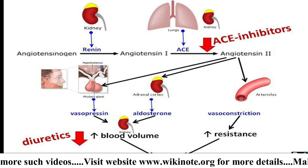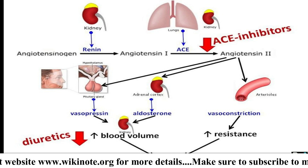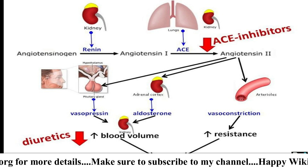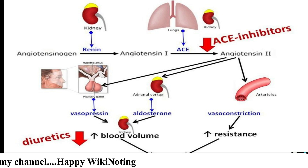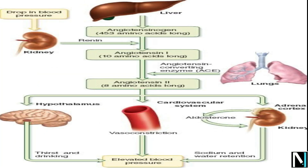Angiotensin II, being a powerful vasoconstrictor, causes constriction of blood vessels, leading to an increase in blood pressure and ultimately an increase in glomerular filtration rate. Angiotensin II also activates the adrenal cortex to release aldosterone, which causes reabsorption of sodium and water from the distal parts of the tubule, ultimately leading to increased pressure and GFR. This complex mechanism is known as the renin-angiotensin-aldosterone system (RAAS).